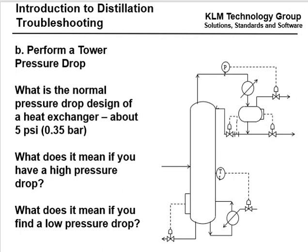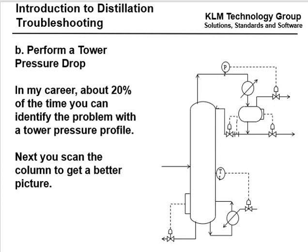The normal design pressure drop for a heat exchanger is about 5 psi (0.35 bar). A very high pressure drop could mean a fouled heat exchanger. A low pressure drop may mean there is not enough flow through the overhead receiver circuit — the flow could be low. In my career, about 20% of the time you can identify the problem with a tower pressure profile. Once you know there's a problem in the column, you can scan the column to get a better picture of what's happening.